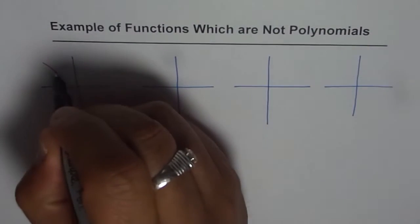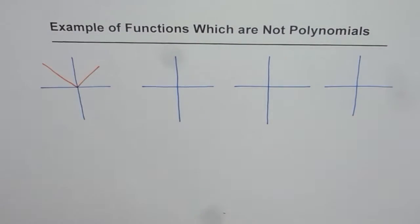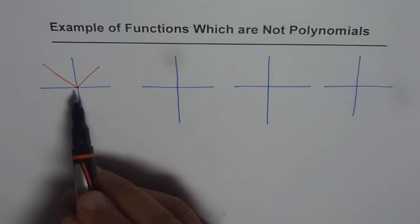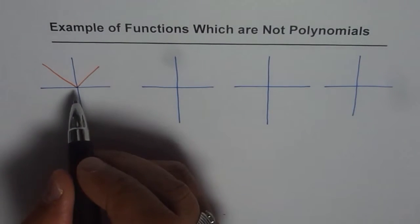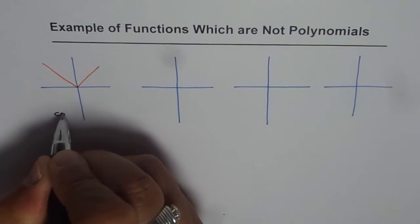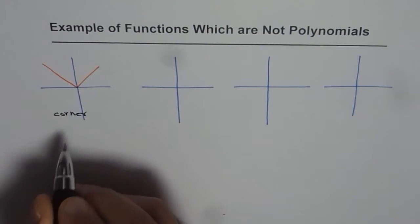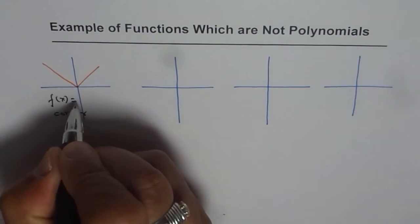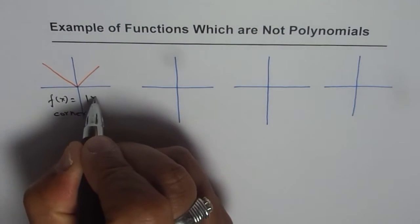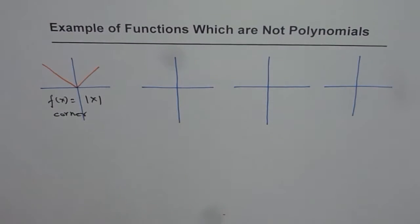If I draw a graph of a function like this — which you know is an absolute value function — we know this is not a polynomial. The reason is that it has a corner. Polynomials do not have a corner. This function can be written as f(x) = |x|, and absolute value of x is not a polynomial.